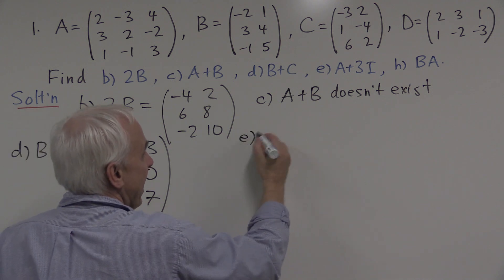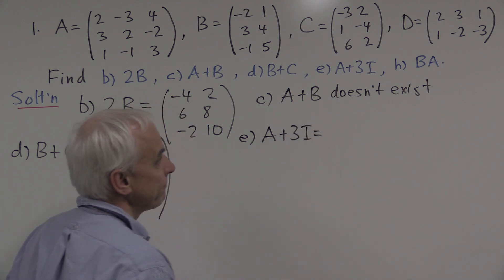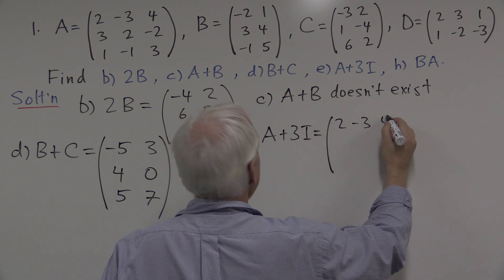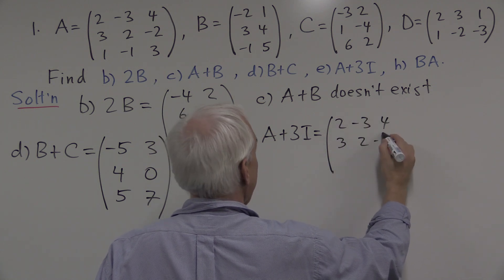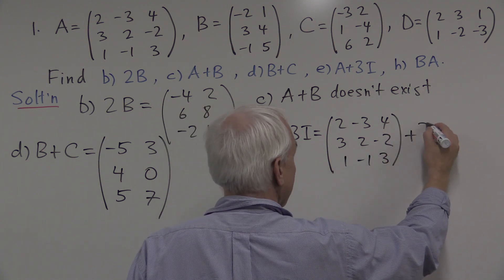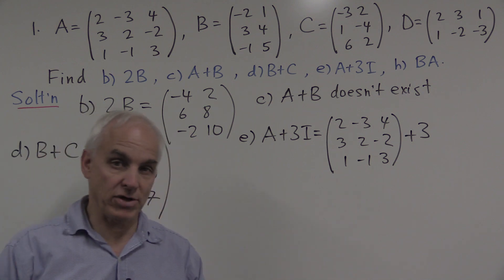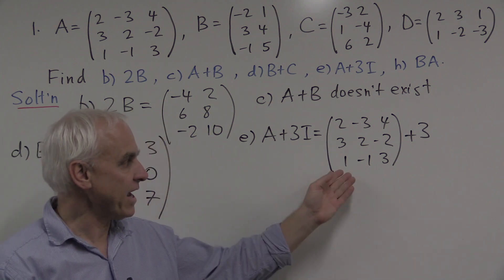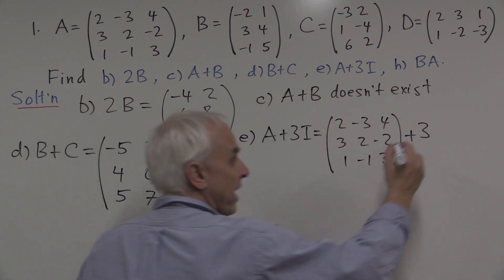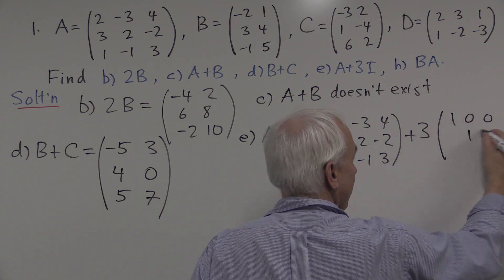How about A plus 3 times the identity? Well, A is this big matrix. 2 minus 3 is 4, 3, 2 minus 2, and 1 minus 1 is 3. And we're supposed to add 3 times the identity matrix. What's the identity matrix? Well, in this case, it's a three by three identity matrix, which has ones down the diagonal and zeros in the other places.